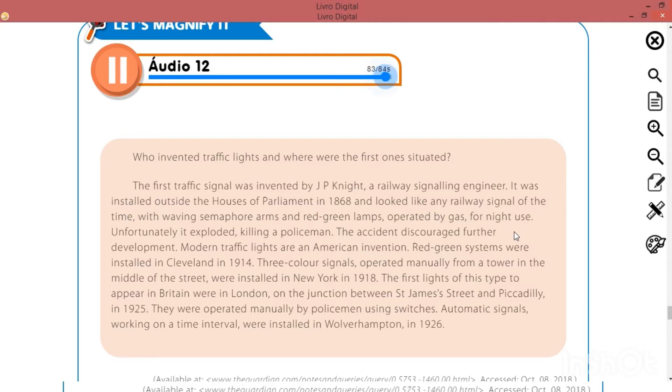Olha só pessoal, quem foi que inventou os semáforos? E onde estavam os primeiros semáforos que já existiram? O primeiro sinal de trânsito foi inventado por J.P. Knight, um engenheiro de sinalização ferroviária. Foi instalado fora das Casas do Parlamento em 1868 e parecia qualquer sinal ferroviário da época, com braços de semáforo e lâmpadas verde e amareladas, operadas a gás para uso noturno. Infelizmente, explodiu e matou um policial. O acidente desencorajou o desenvolvimento.